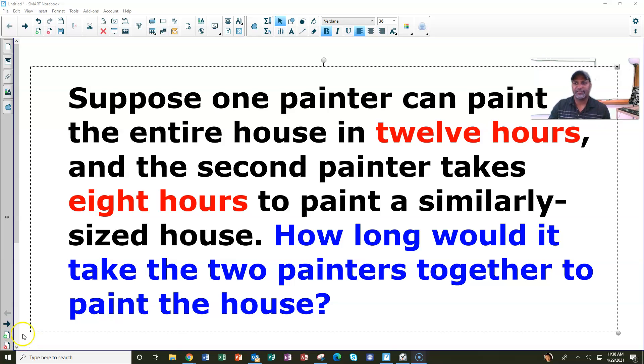Suppose one painter can paint the entire house in 12 hours and the second painter takes eight hours to paint the same house or a house that's about the same size. How long would it take the painters together to paint the house? Pause the video and put what you think in the chat. How long do you think it would take?